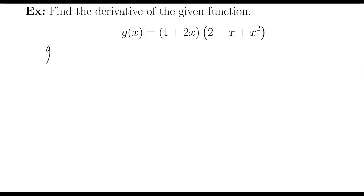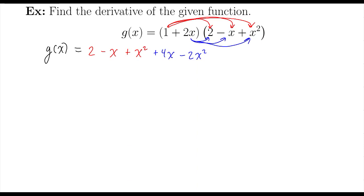Let's get ourselves set up to do that. So I'm going to multiply first the 1. 1 times 2 is 2. 1 times negative x is negative x. 1 times x squared is x squared. 2x times 2 is 4x. 2x times negative x is negative 2x squared. And 2x times x squared is 2x cubed.